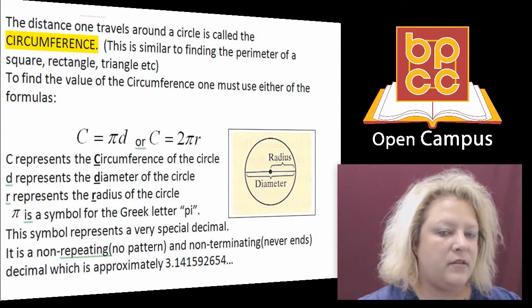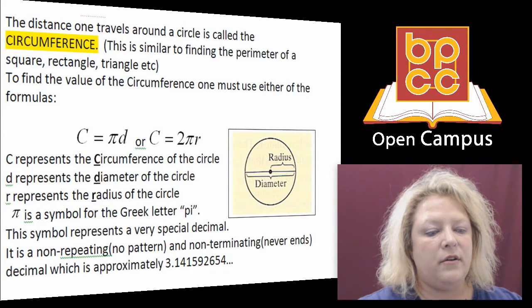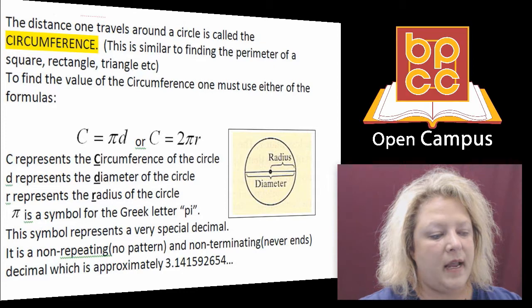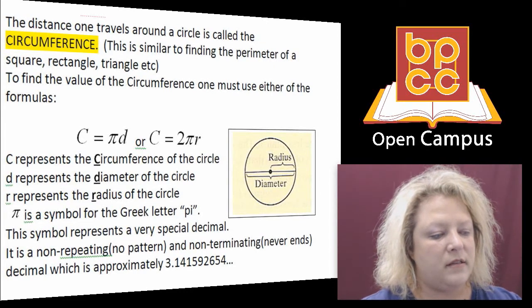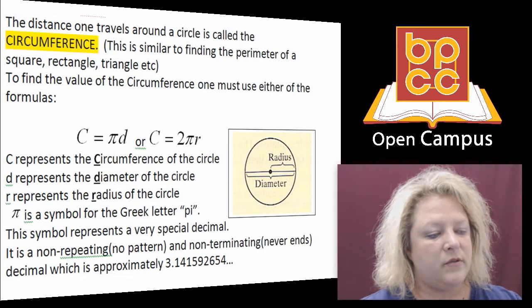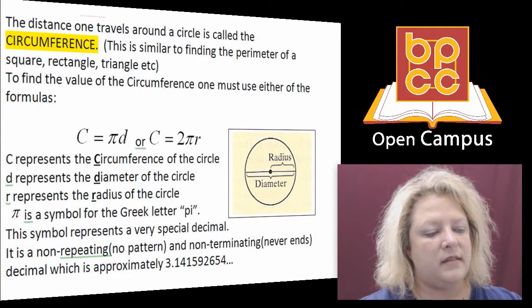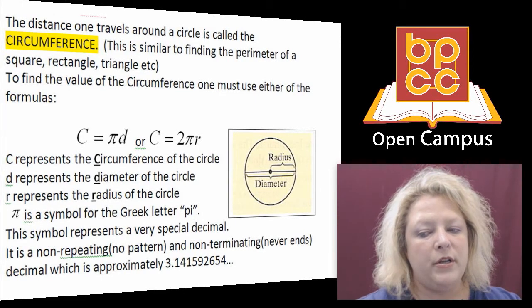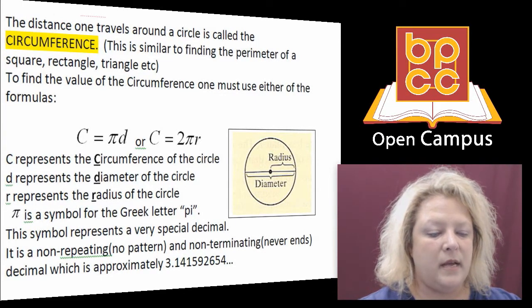And there are two ways to find circumference. You can either use circumference equals pi times diameter, pi is that little symbol that looks like two sticks with a little wave line over it, that's called the pi symbol, or you can do 2 times pi times the radius.